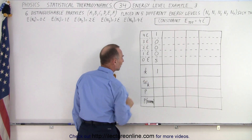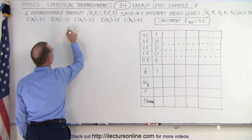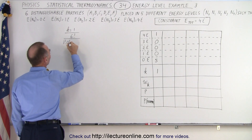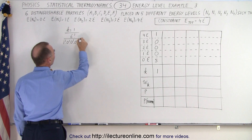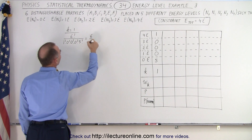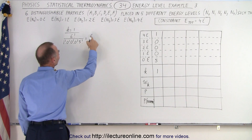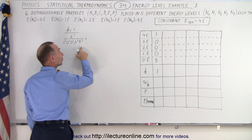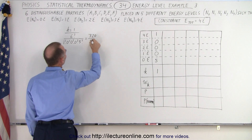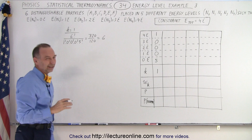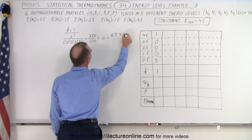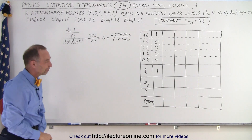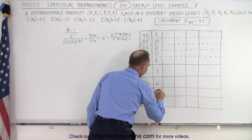Now we need to find the total number of microstates in this macrostate. For k equals one, we have six factorial divided by one factorial, zero factorial, zero factorial, zero factorial, and five factorial. Writing it out: six factorial is 720 divided by 120 — five factorial — which equals six. You can simply say that's six times five times four times three times two times one divided by five times four times three times two times one; these cancel out and we're left with six. That gives us six microstates and a thermodynamic probability of six.